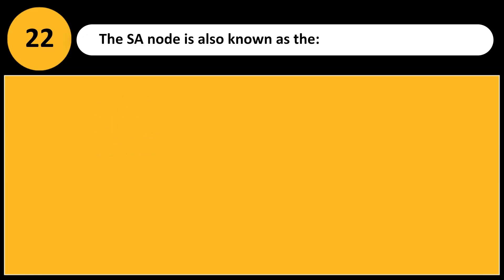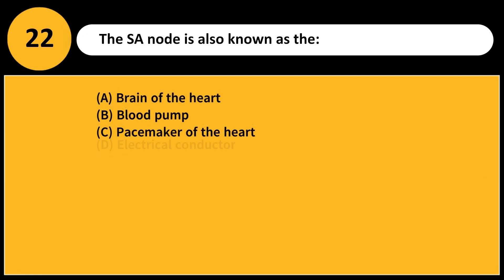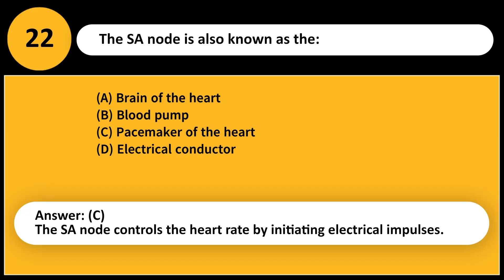The SA node is also known as the: A. Brain of the heart. B. Blood pump. C. Pacemaker of the heart. D. Electrical conductor. Answer: C. The SA node controls the heart rate by initiating electrical impulses.